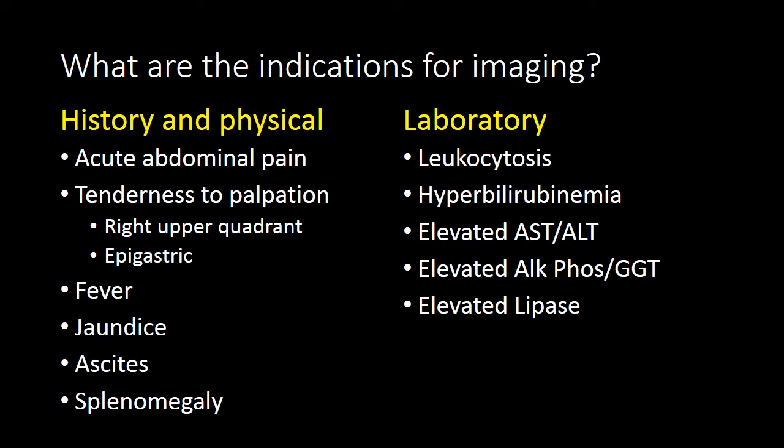When assessing a patient, there are certain symptoms from the history, physical exam findings, or laboratory abnormalities that will lead to an evaluation of the hepatobiliary system. Patients often will present with acute abdominal pain that localizes to the right upper quadrant or epigastric region. Some patients will present with jaundice or fever, others with ascites or splenomegaly.